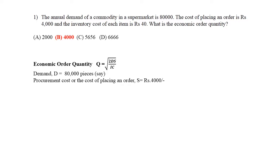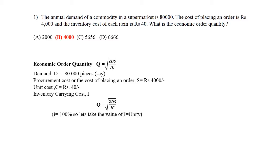The inventory cost of each item is rupees 40. In the formula IC, C is basically the unit cost, which is rupees 40. In this question, the inventory carrying cost I is not mentioned, which means I is 100% — if it is not given in the question, you take I as unity. Putting these values in the formula gives the answer as 4,000 pieces, which signifies quantity.